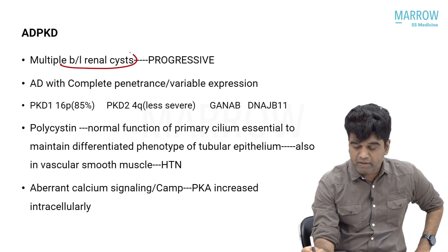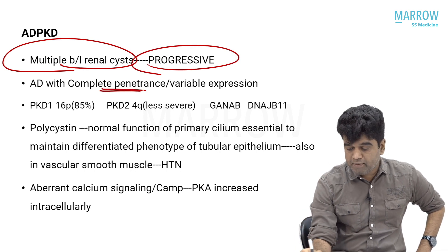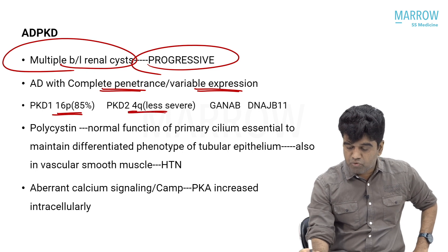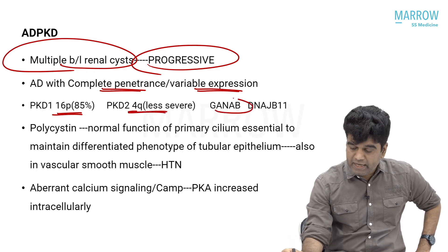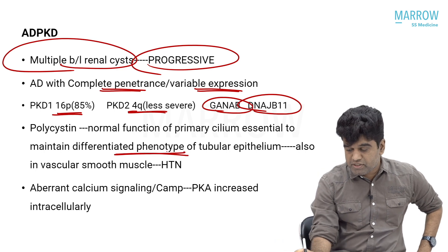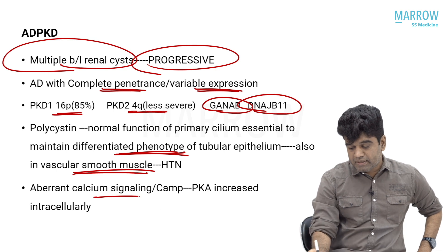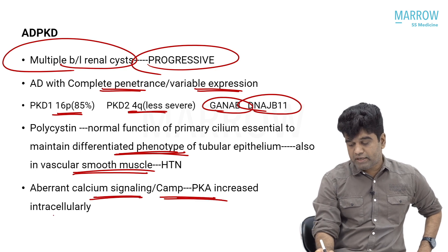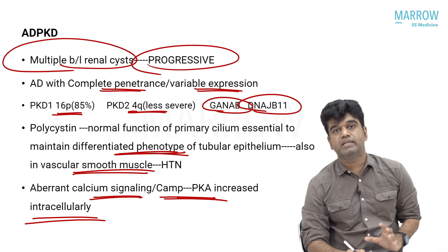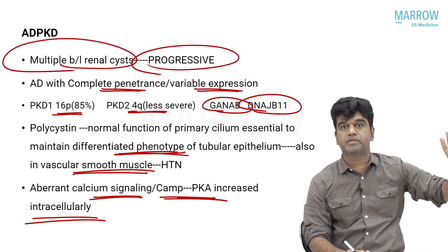To recap: multiple bilateral renal cysts — progressive, very progressive. Complete penetrance with variable expressivity. PKD1 on 16p, PKD2 on 4q (less severe). GANAB gene and DNAJB11. Polycystin's normal function is to maintain differentiated phenotype of the tubular epithelium; it is also present on vascular smooth muscle. Aberrant calcium signaling, cyclic AMP, protein kinase A are increased intracellularly — mostly mediated by vasopressin via the V2 receptor.